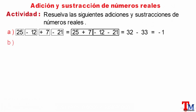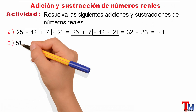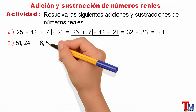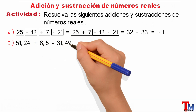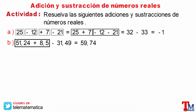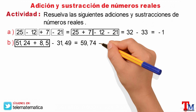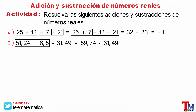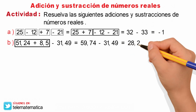Literal B: 51.24, plus 8.5, minus 31.49. In this case, we have the addition and subtraction of rational numbers — basically decimal numbers. Solving the numbers that have the same sign, this will be equal to 59.74, and we keep minus 31.49. As the final result, we have 28.25.